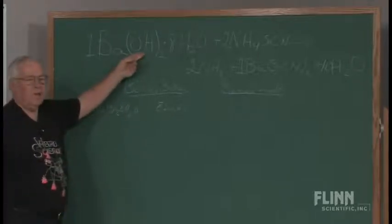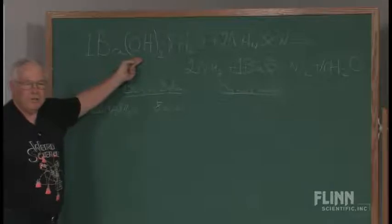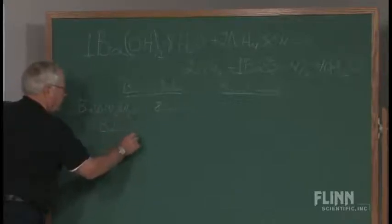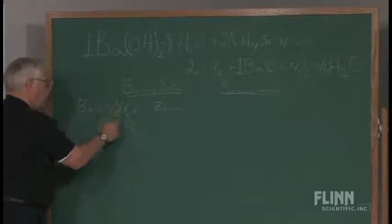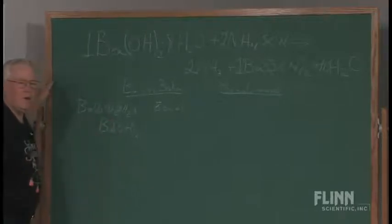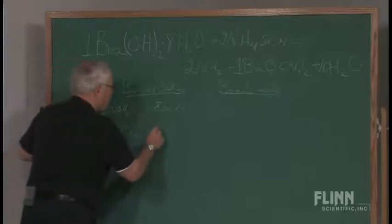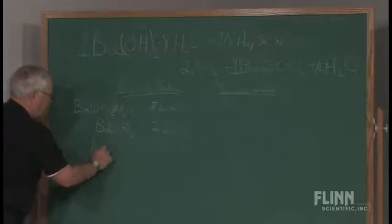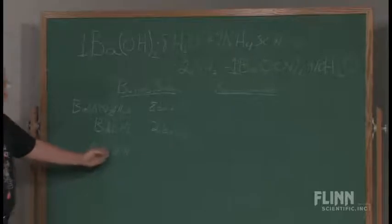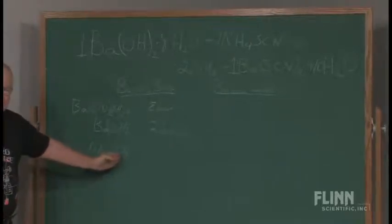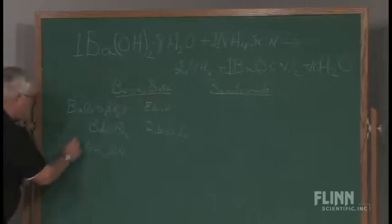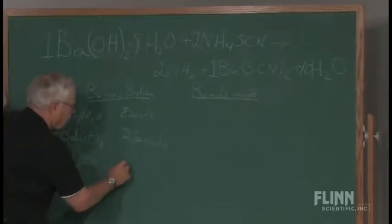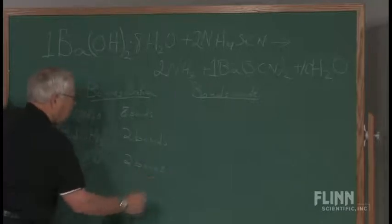What other bonds had to be broken? I had to get OHs off of this barium, and there are two of them. So the barium hydroxide would have broken. These would have broken off, and there would be two bonds. So that is two bonds that are broken. Now, the NH4SCN would have broken in ions from the NH4 and the SCN part. There are two of those molecules. So I must have broken two of these. So I have two bonds there.